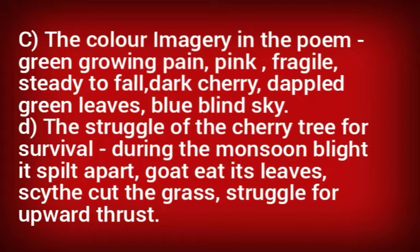Sub-question D: the struggle of the cherry tree for survival. During the monsoon blight, the tree was split apart. Then a goat ate its leaves. The gardener cut the leaves using his scythe. We also see the struggle for the upward thrust — the tree's struggle to get sunlight, air, and water.